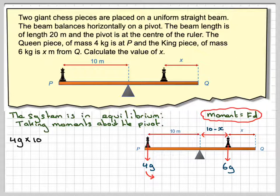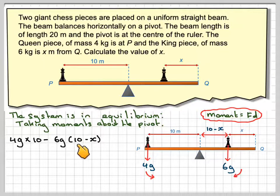And then you've got to take away from that this force here, which is now a clockwise moment, so it's negative. That's what we take away, 6G times the distance in brackets, which is 10 minus X, and because it's in equilibrium, that will be equal to 0.